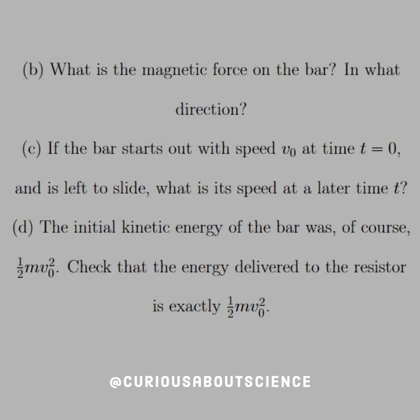Part B: what is the magnetic force on the bar? In what direction? Part C: if the bar starts out with speed V0 at T equals zero and is left to slide, what is the speed at a later time T? Okay, so we got an initial condition question there.